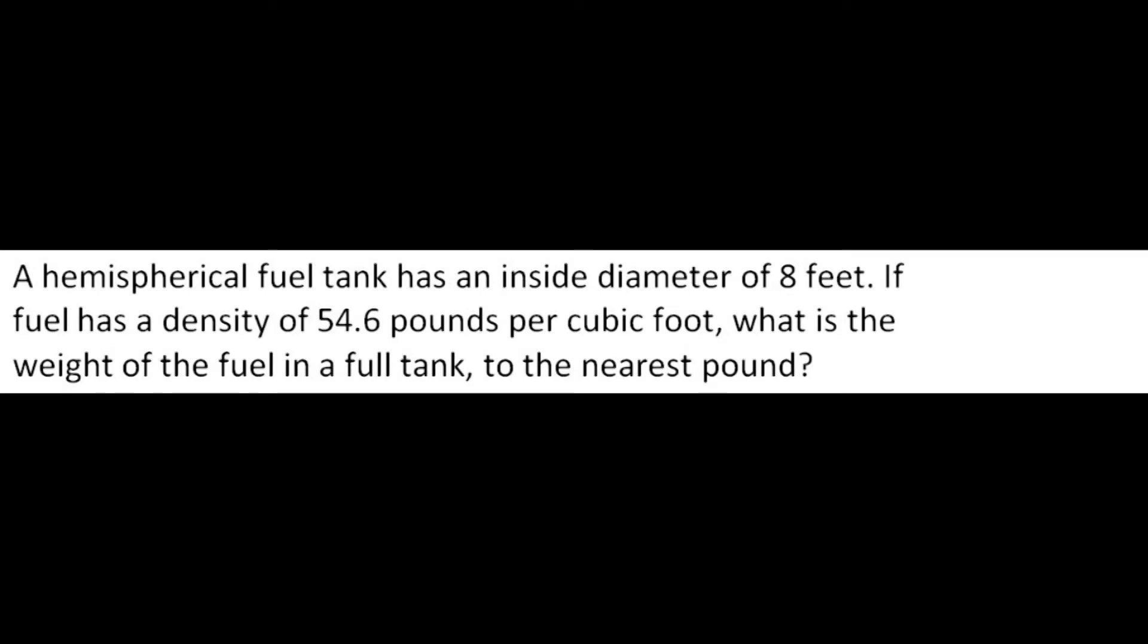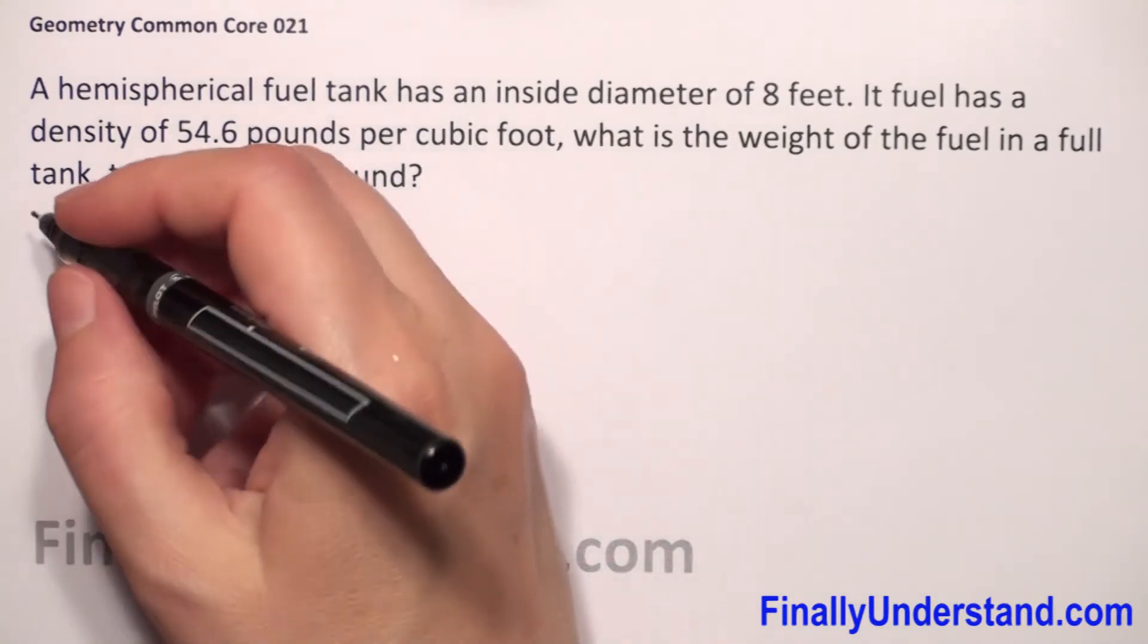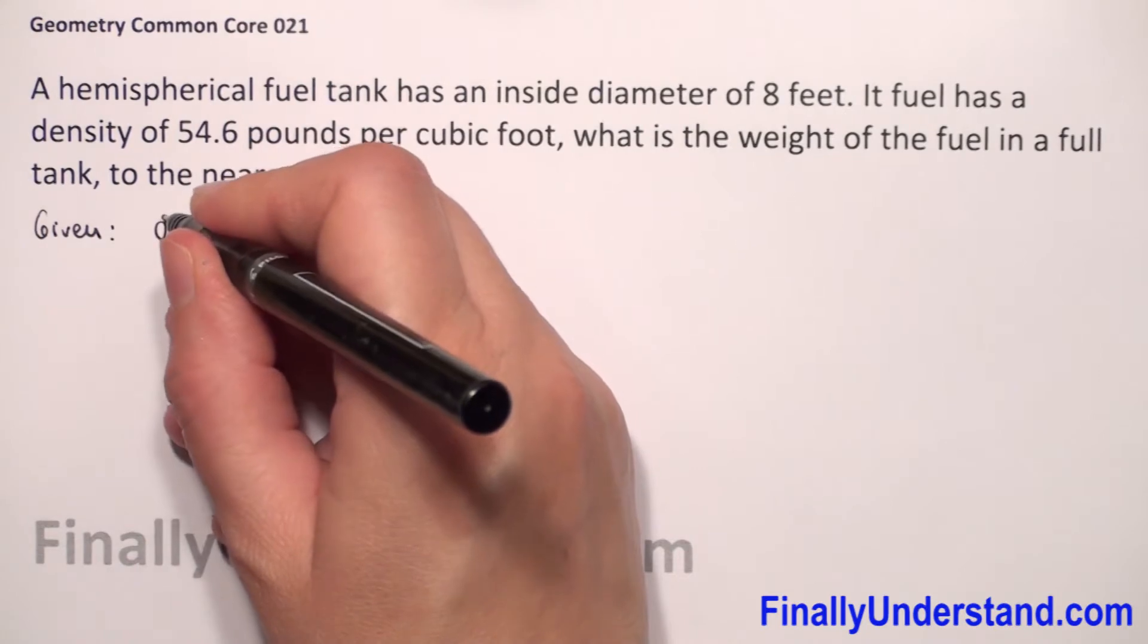A hemispherical fuel tank has an inside diameter of 8 feet. The fuel has a density of 54.6 pounds per cubic foot. What is the weight of the fuel in a full tank to the nearest pound?